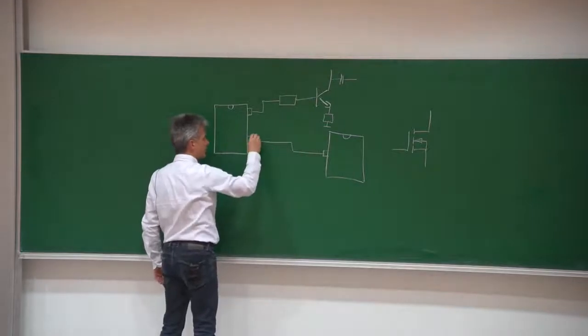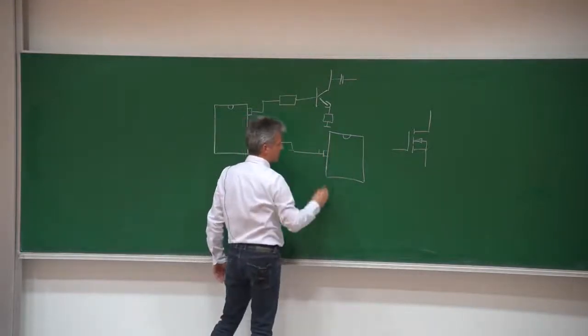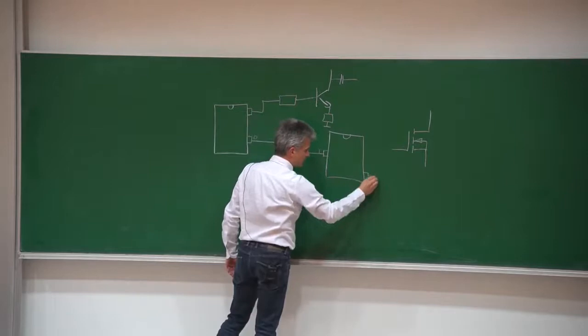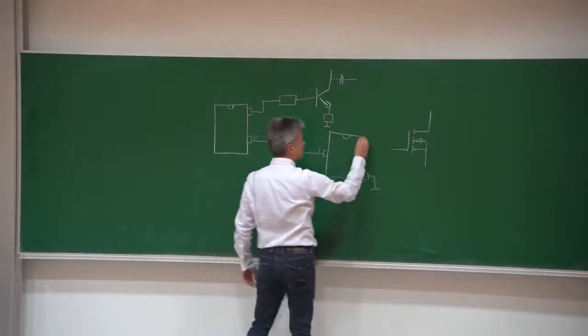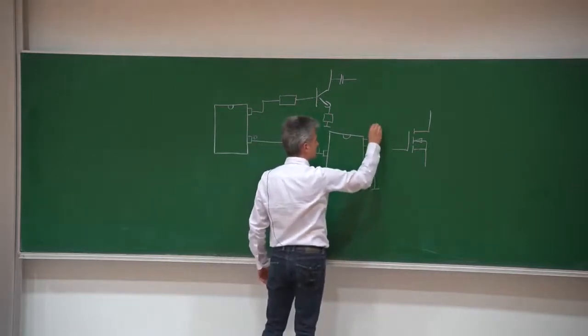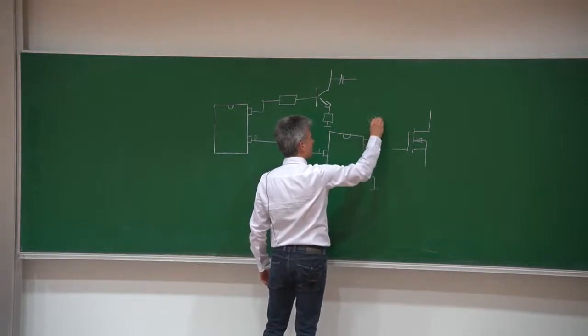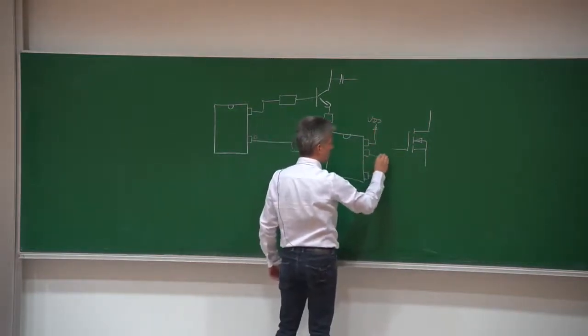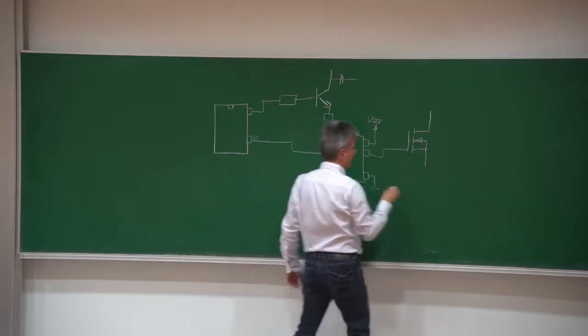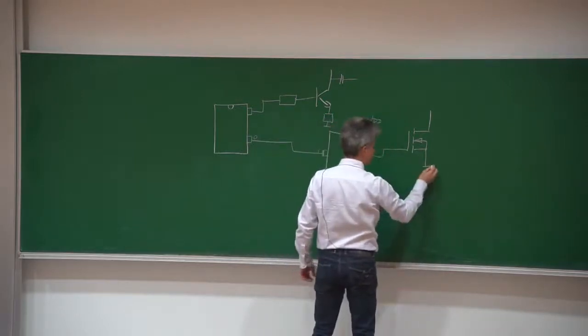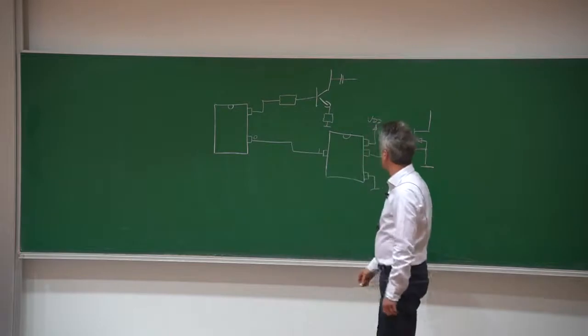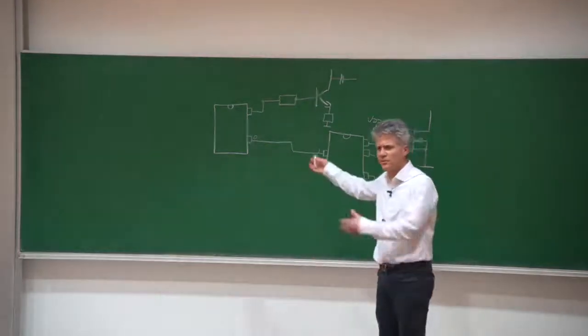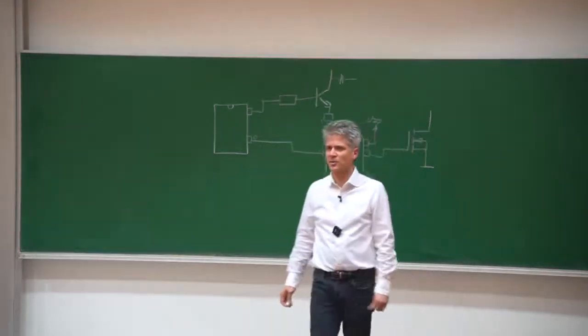So there is current flowing from this output here into the input and here is our ground pin. Here is our power supply and here I have the ground symbol. So things clear, somehow in this way you are drawing your schematic, isn't it?